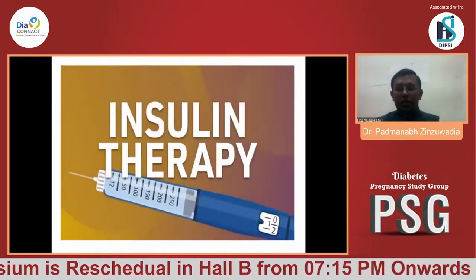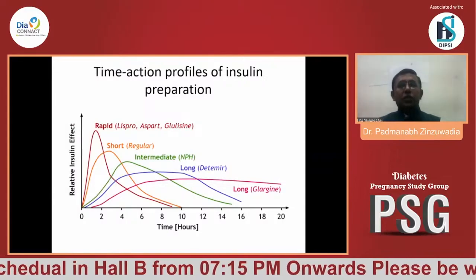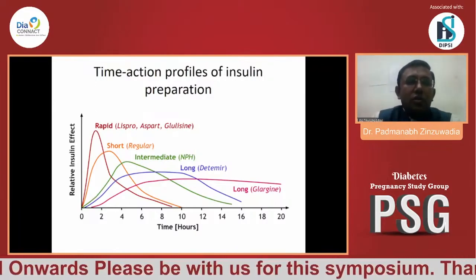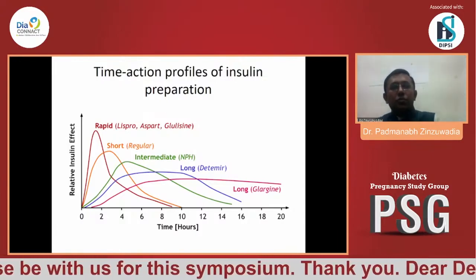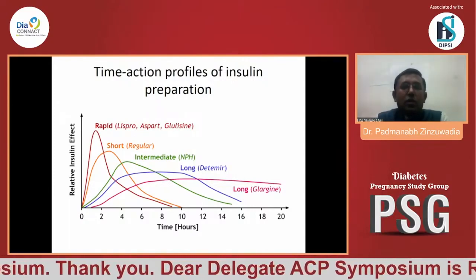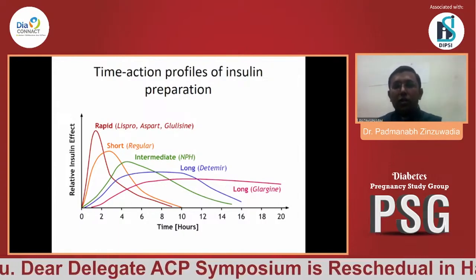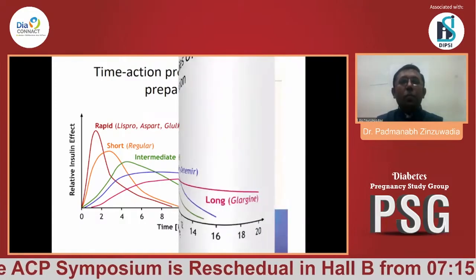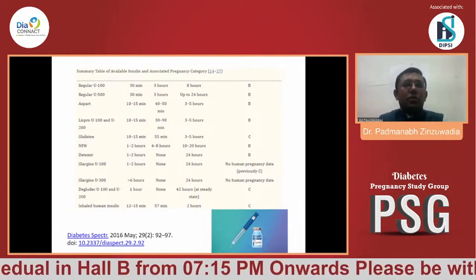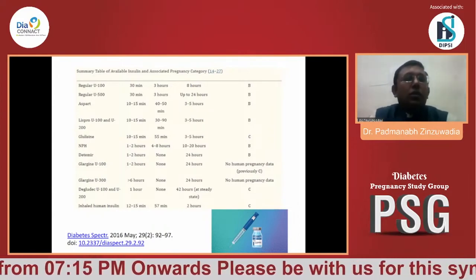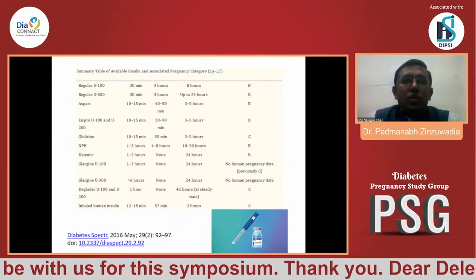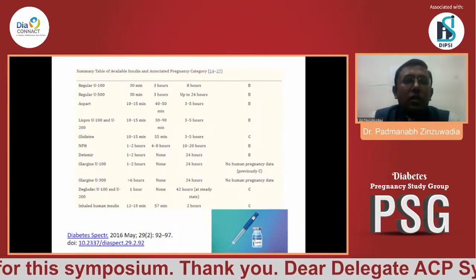Insulin is the mainstay of therapy. Depending on time-action profile, insulin preparations can be categorized as rapid-acting — Lispro, Aspart, and Glulisine; short-acting — regular insulin; intermediate-acting — NPH and detemir; and long-acting — Glargine, Degludec, and Glargine U300. Not all insulins are approved for use in GDM. Regular insulin and rapid-acting Aspart and Lispro have Category B approval. Glulisine has Category C, so it is better to avoid it.